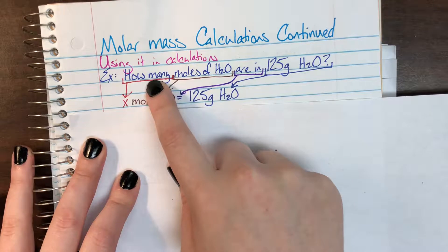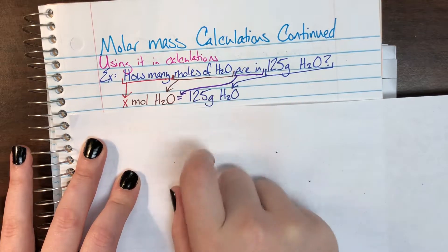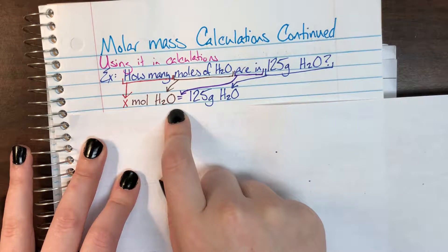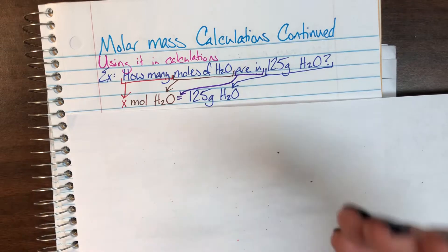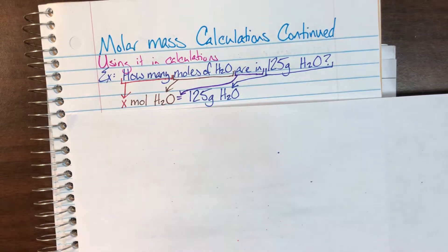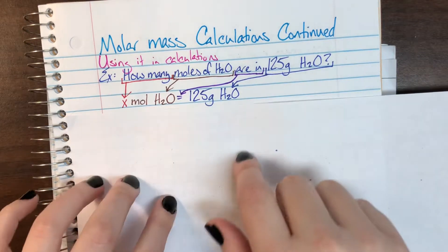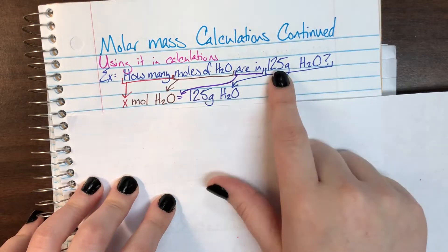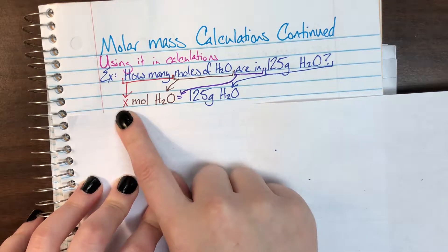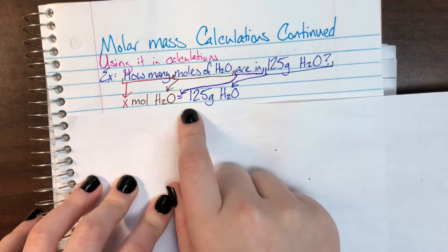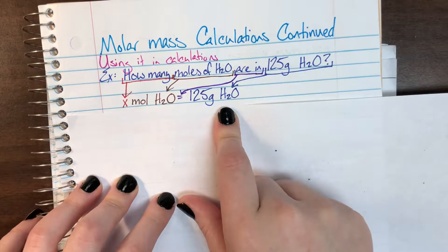The unit attached to the question word is just restated. How many moles of H2O just becomes X moles H2O are in. That's our connection word saying to us that these values will be related somehow. So that becomes our equal sign. And then we re-restate the number that was actually given in the problem. So X moles H2O equals 125 grams of H2O.